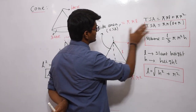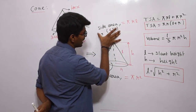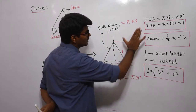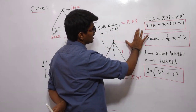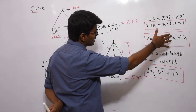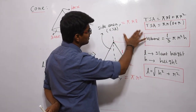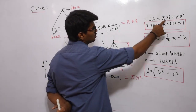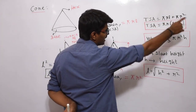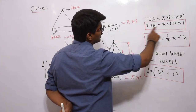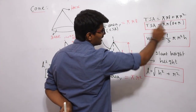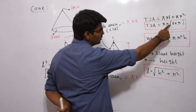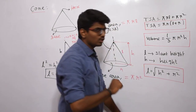The total surface area has two parts: one is the side area and one is the base area. The total area will be the summation of these two: πRL + πR². If I take πR as common, it will be equal to πR(L + R).